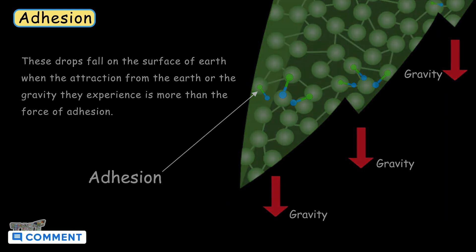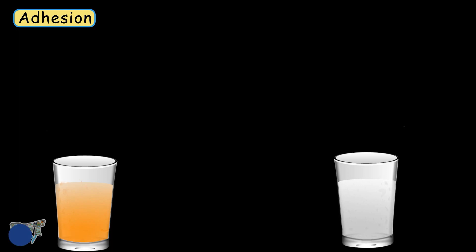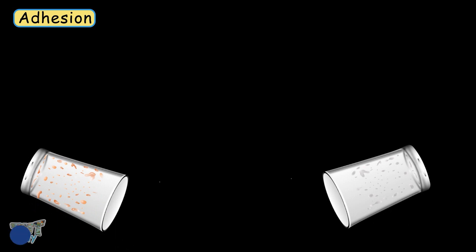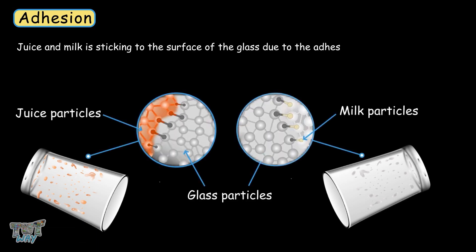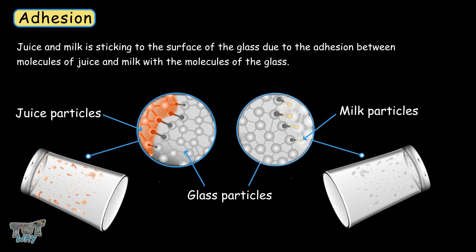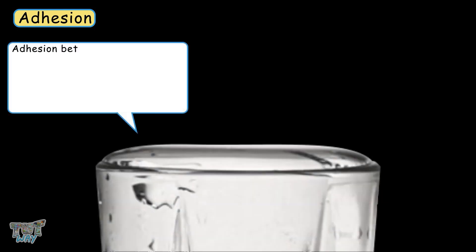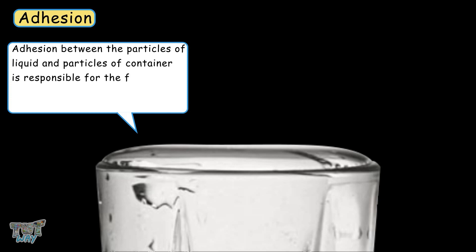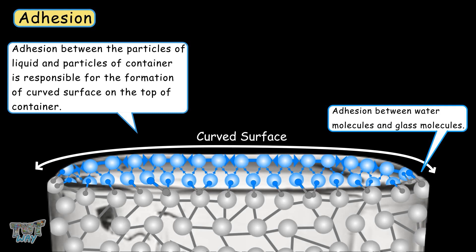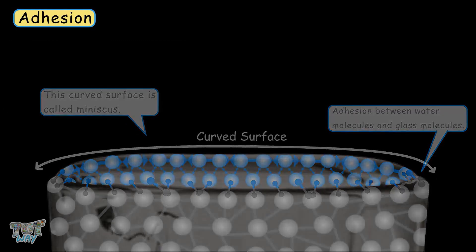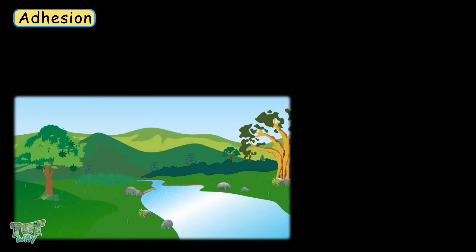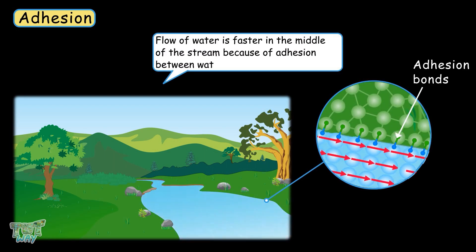Let's have another example. Take two glasses — add orange juice to one and milk to the other. Now empty both glasses. In both cases, you will see some juice or milk sticking to the inner surface of the glass. Why? The juice and milk stick to the glass due to adhesion between their molecules and the molecules of the glass. Adhesion between the particles of liquid and the container is also responsible for the formation of a curved surface on the top of the liquid in the container, and this curved surface is called a meniscus. The flow of a river or stream is greater in the center than at the banks because cohesion between the water molecules and the surface is greater at the edges than in the middle.